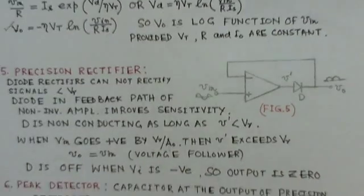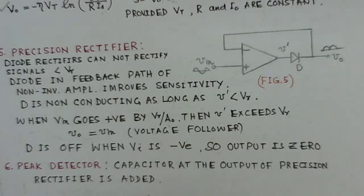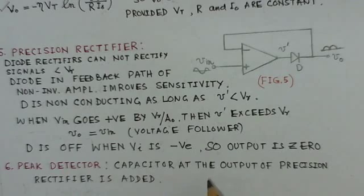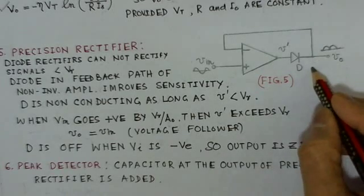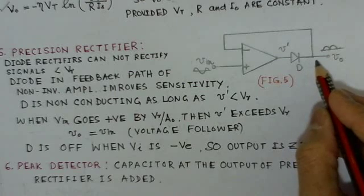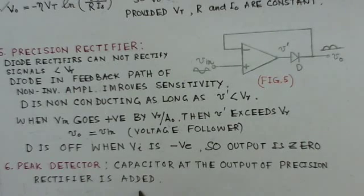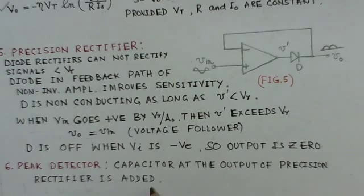Another circuit is the peak detector, which is a variation of the precision rectifier. Adding a capacitor to the precision rectifier circuit creates a peak detector. The advantage of this op-amp-based peak detector over a simple diode peak detector is that it can detect smaller signals.